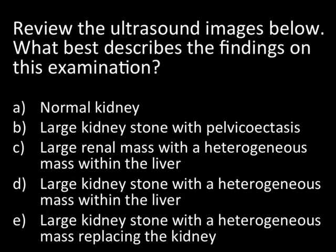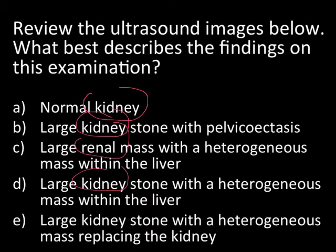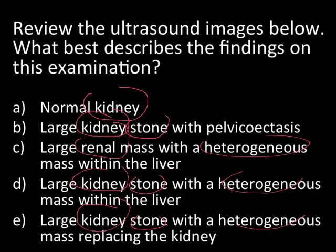Here's an example of a question where, if you're a smart test-taker used to looking for clues, you can answer it without the image. This was an image-based ultrasound question. You don't need the ultrasound because if you look at common words across the answer options, you see kidney repeated multiple times, stone repeated three times, and heterogeneous mass appearing three times. A savvy test-taker identifies the answer with the most common elements — which in this case is D — and that turns out to be the correct answer.